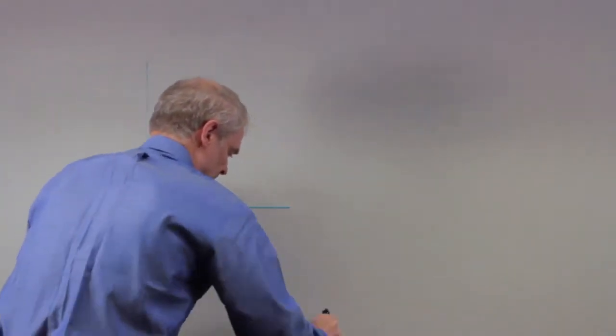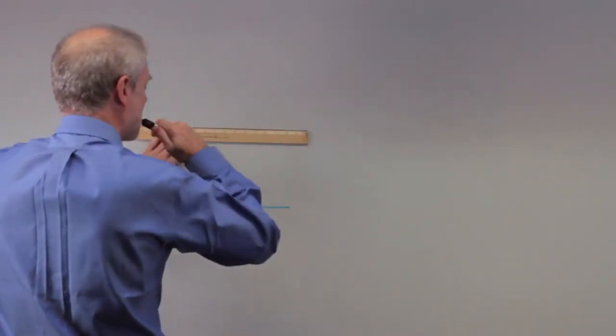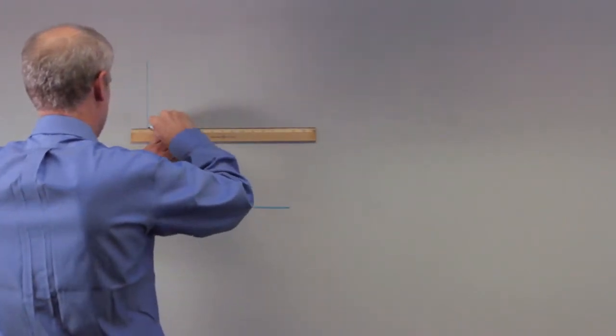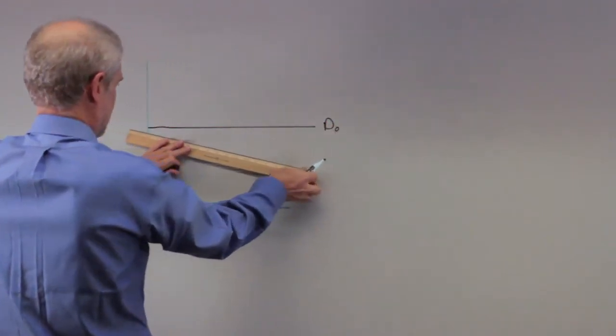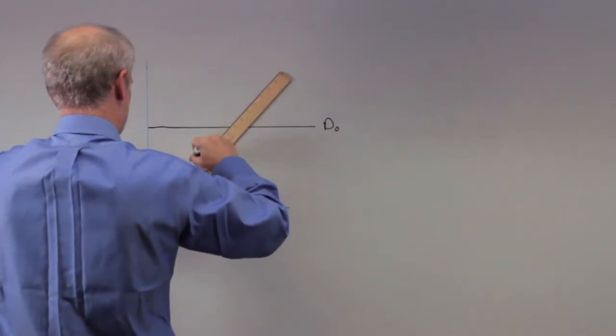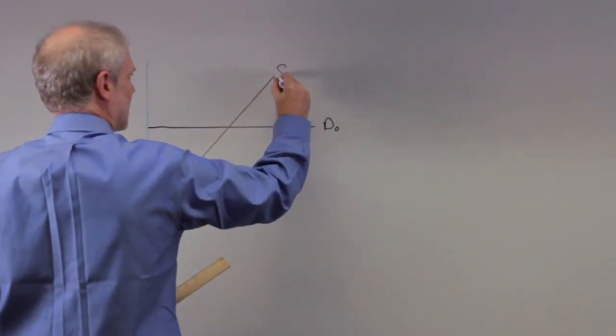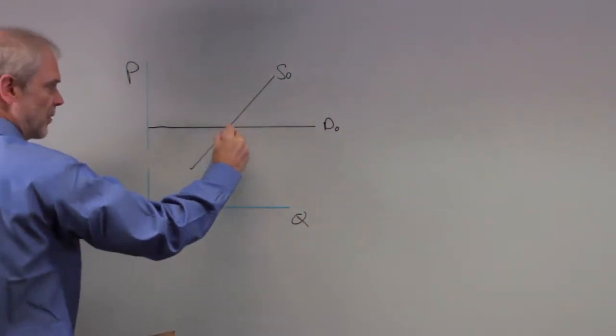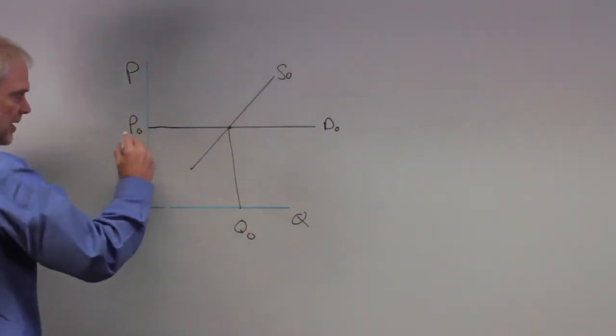Before you even look at the answers or choices, let's draw a perfectly elastic demand curve. This may seem like an extreme, but it's not. We'll draw a supply curve just to make life interesting. Here's our quantity, here's our price, and here we are at some equilibrium point—call that Q0 and P0.